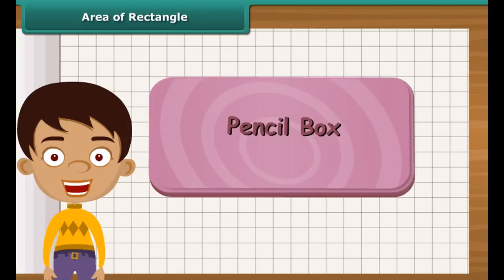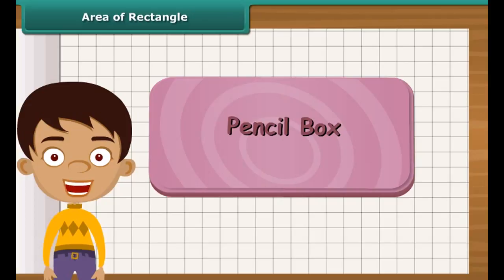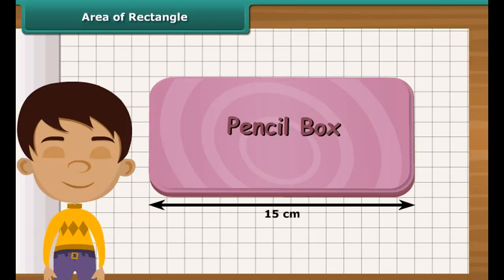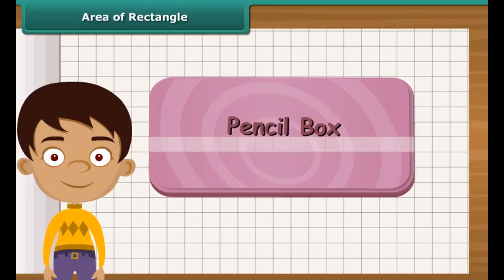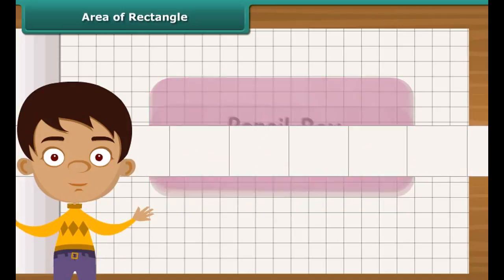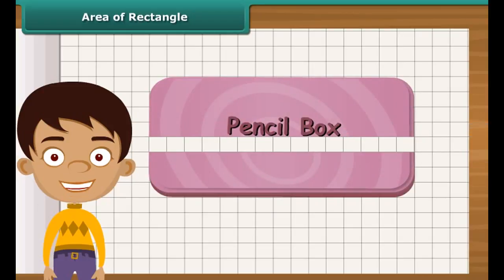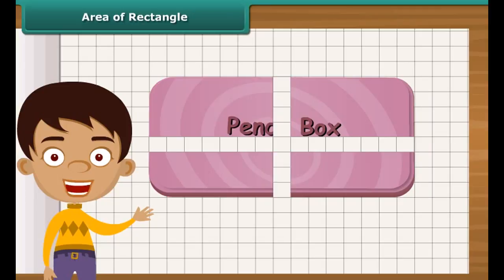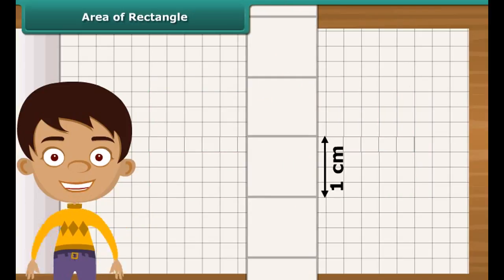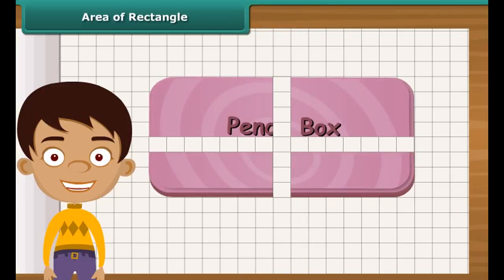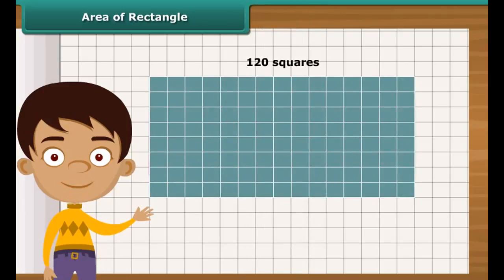Let us find the area of a rectangle by counting squares. Take a rectangular pencil box and place it on a squared paper. The length of the box is 15 centimeters. Arrange 15 squares of side 1 centimeter along its length. The breadth of the box is 8 centimeters. Arrange 8 squares of side 1 centimeter along its breadth.